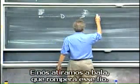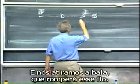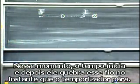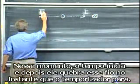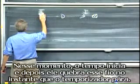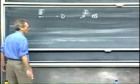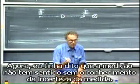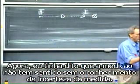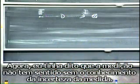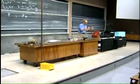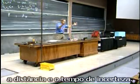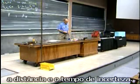We fire a bullet which breaks wire one. At that moment the timer starts, and then it breaks wire two, and that's when the timer stops. Now, I told you a measurement is meaningless without knowledge of the uncertainty in your measurement. So there are two uncertainties involved: the distance and the timing uncertainty.